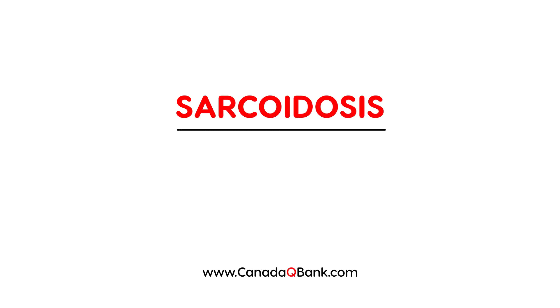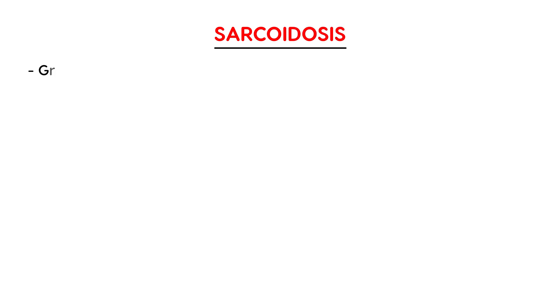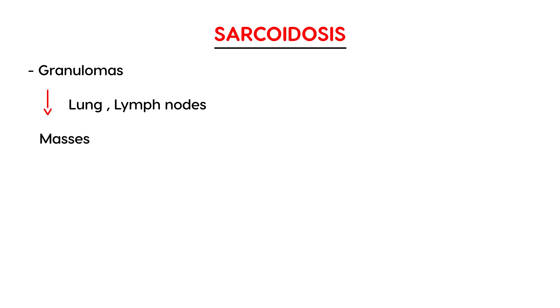Sarcoidosis is the topic for this video. Sarcoidosis is essentially an immune disorder. It involves the development of granulomas in many organs — most commonly the lungs and lymph nodes. Granulomas are clusters or masses that kind of resemble tumors, and they are clumps of cells from the immune system, specifically macrophages and lymphocytes.